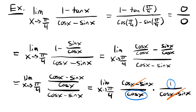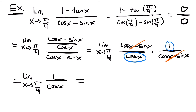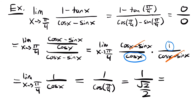Since those two terms cancel out and we're left with 1 over cosine x, we can rewrite to have the limit as x approaches pi over 4 of 1 over cosine x. Now we can plug in pi over 4, and we'll have 1 over cosine of pi over 4, which is square root of 2 over 2. So this would be equal to 2 over the square root of 2, which if you rationalize — multiply by the square root of 2 on the top and bottom — we get our answer of the square root of 2.